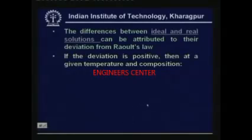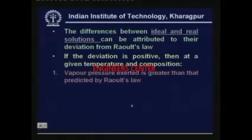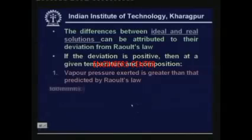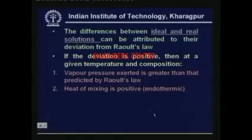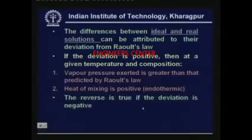For positive deviation, the vapor pressure at a given temperature and composition is greater than that predicted by Raoult's law, and the heat of mixing is positive — meaning the process is endothermic. For negative deviation, the reverse is true: the process is exothermic.